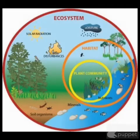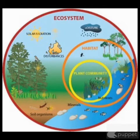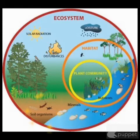Ecosystems are classified by a few things: the intensity and the amount of sunshine the area gets, the rainfall and water, and the minerals in the soil.